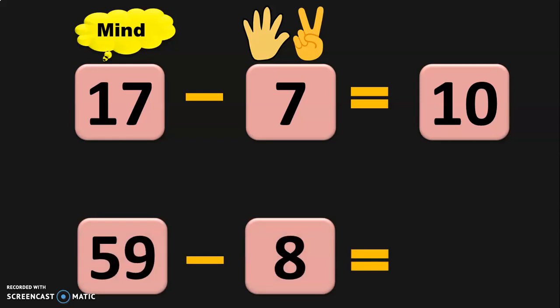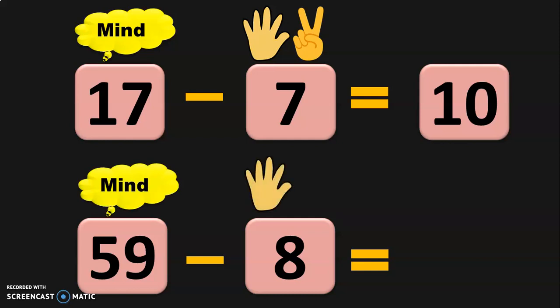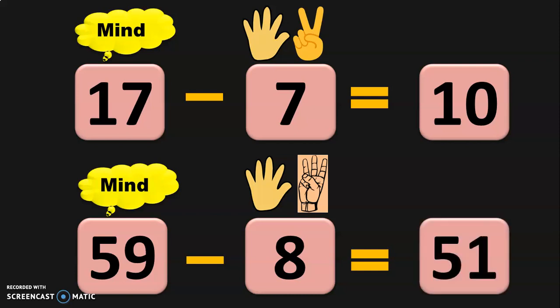Let us do another sum: 59 minus 8. Keep 59 in mind and 8 in the fingers — 5 fingers in one hand, 3 in the other. Before 59: 58, 57, 56, 55, 54, 53, 52, 51. So the answer is 51. The topic of horizontal and vertical subtraction is covered in detail in a separate video; the link is given below in the description box.